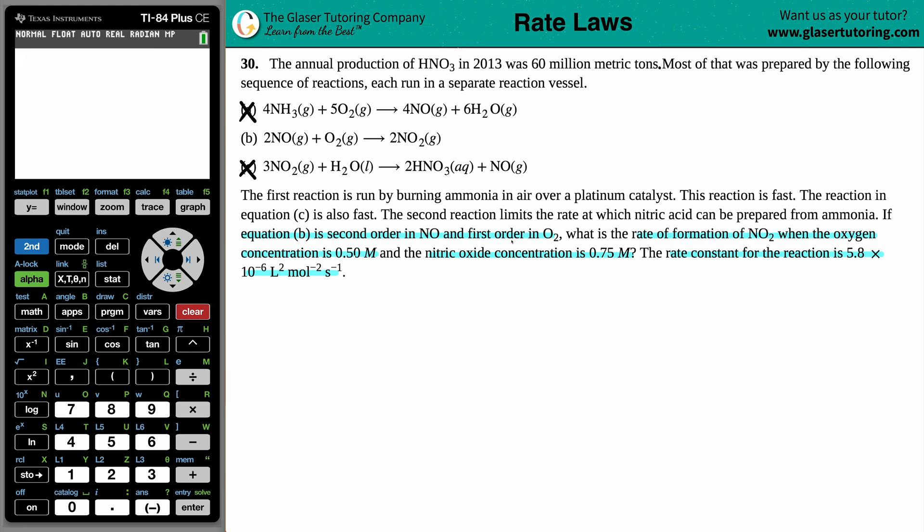Now, it seems like they're describing a generalized rate law, where they're describing the orders of the reactants, and they definitely told us a rate constant. A rate constant is a K value, lowercase K. Uppercase K is Christina, not Kelvin. Just kidding. So the rate constant, lowercase K, is 5.8 times 10 to the negative sixth.